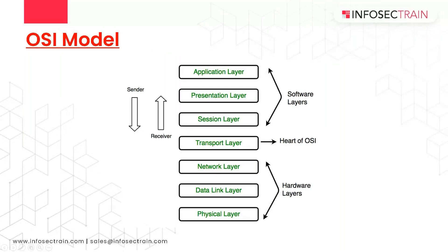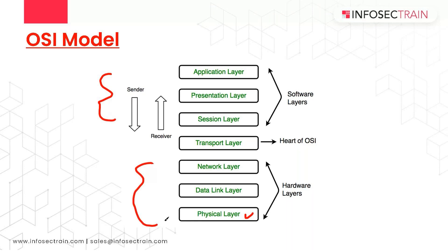After this we have the OSI model - Open System Interconnection. We have seven layers: the physical layer at the bottom, hardware-based layers, software-based layers, and in between we have the transport layer which is considered the heart of our OSI model. At the very top we have the application layer.